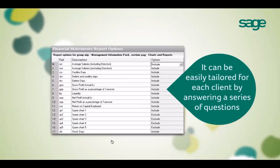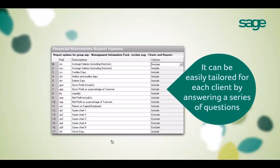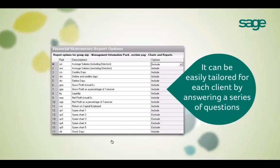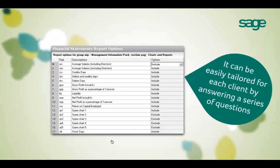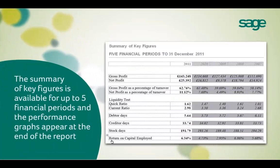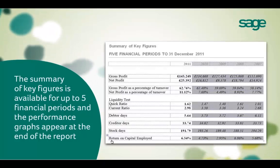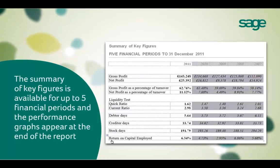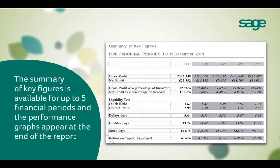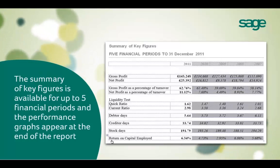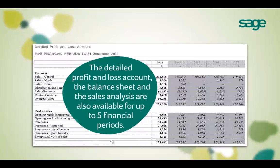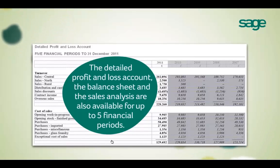You can easily tailor the report for your clients by making a few simple selections. The management information pack will report on up to five years of data, which can be easily imported from Sage 50 Accounts. It will automatically calculate net and gross profit percentages, creditor, debtor and stock days, liquidity tests and perform ratio analysis — so to the client it looks like you've done a lot of additional work, but your secret's safe with me.